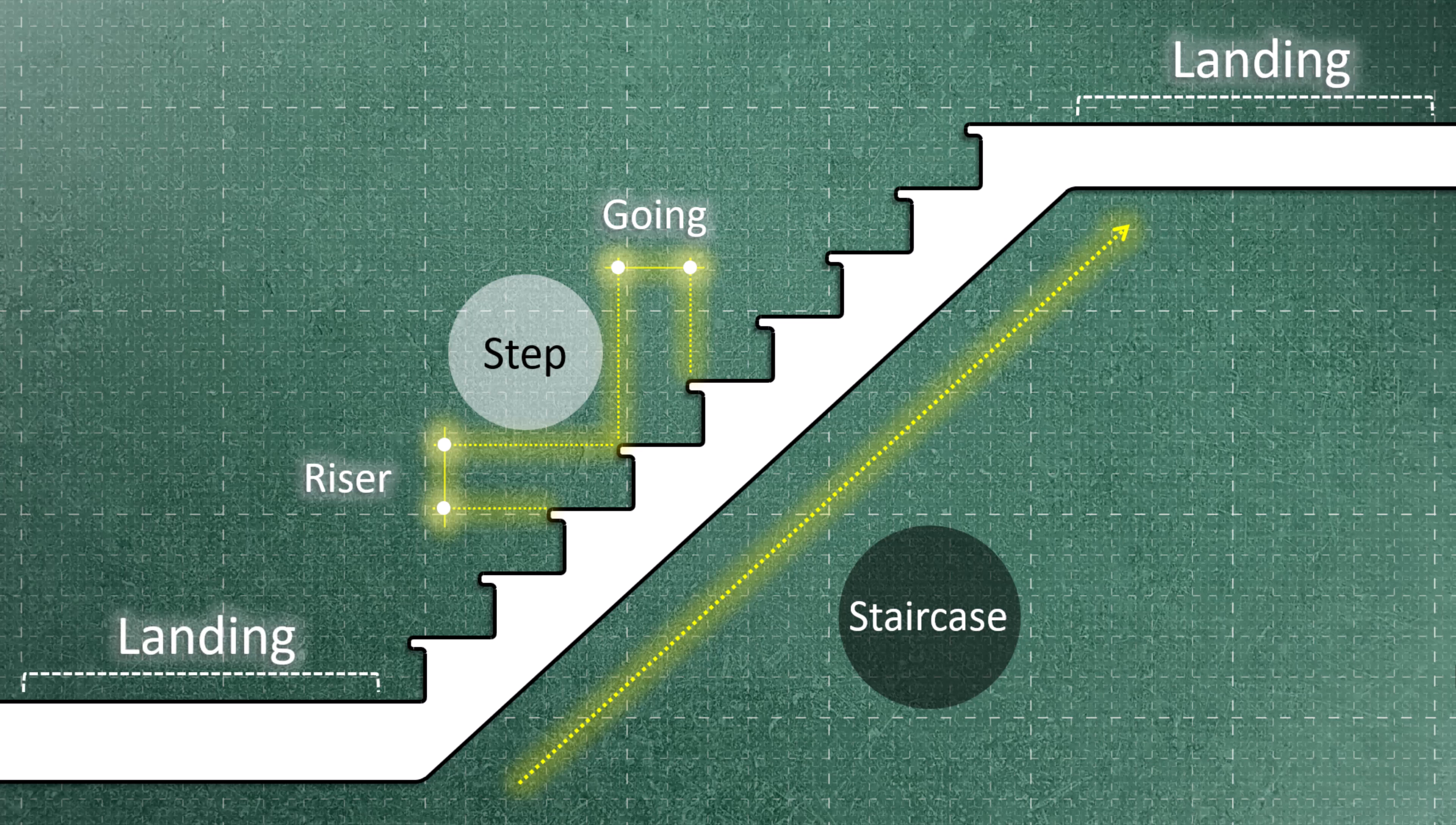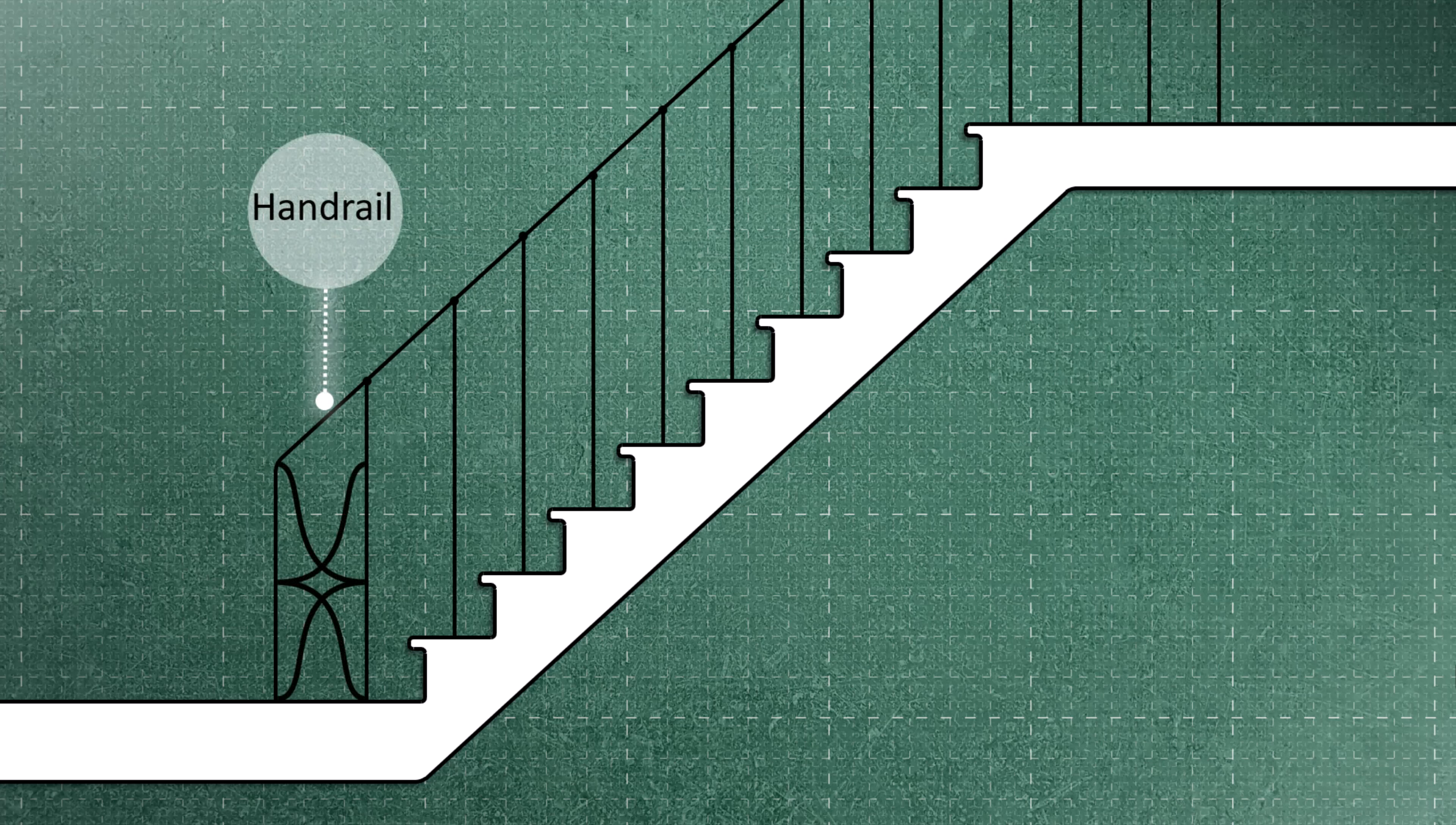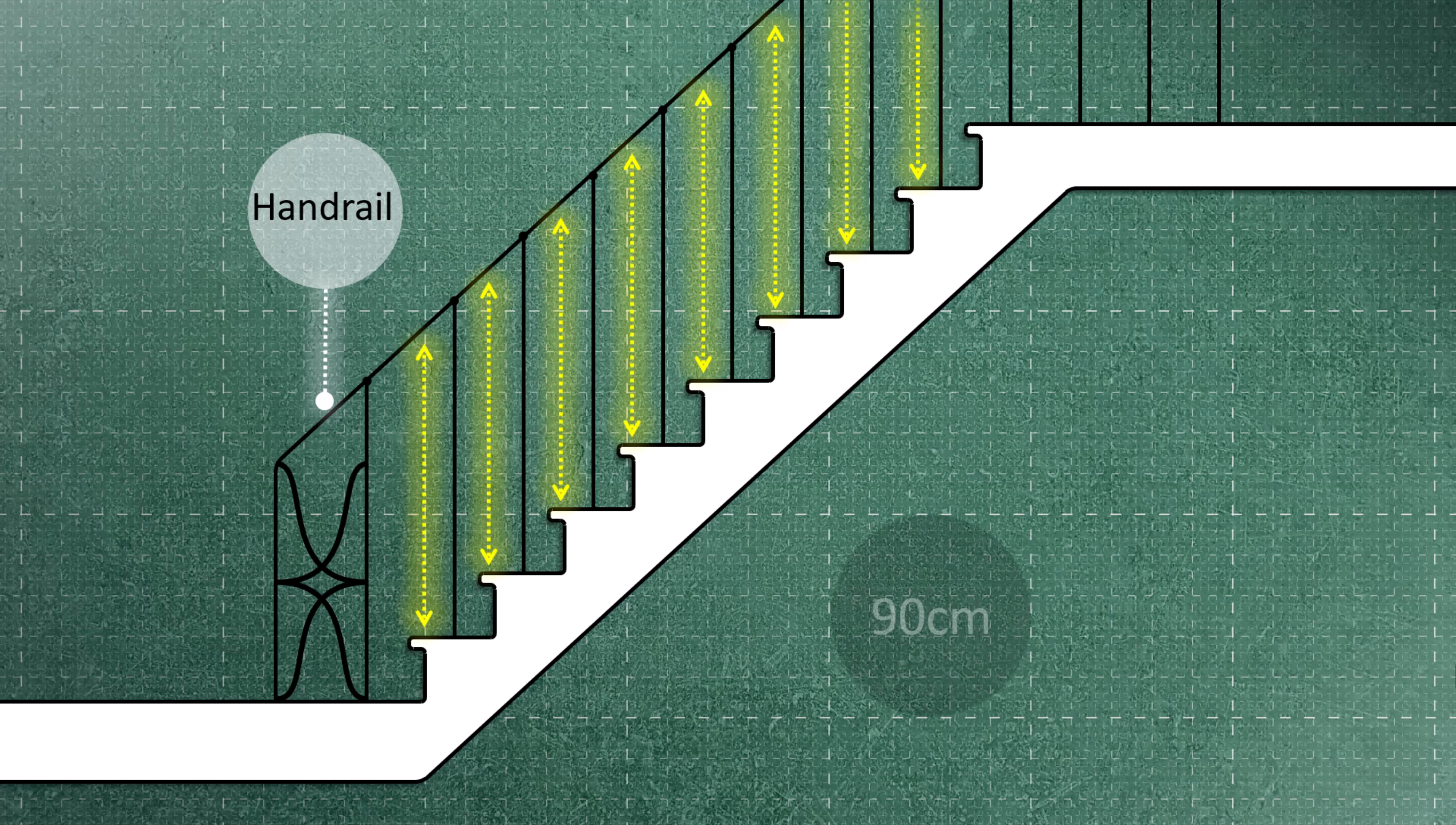The angle at which the staircase meets the horizon is called the pitch. To prevent falls, stair handrails are always included. These handrails run from the first step to the last step, maintaining a consistent height of 90 centimeters throughout the entire staircase.